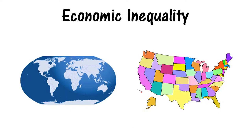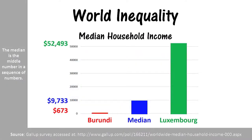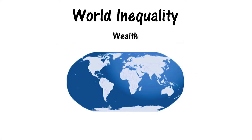Now let's examine some data showing the degree of economic inequality in the world and in the US, starting with the world in terms of income. A Gallup survey that gathered data from 2006 through 2012 found that the world's median household income was $9,733. The country with the largest median household income was Luxembourg at $52,493 per household, while the country with the lowest was Burundi, with a median household income of just $673.